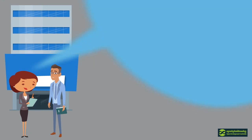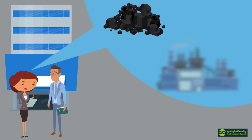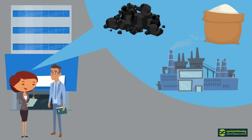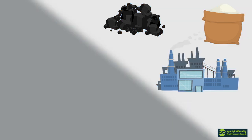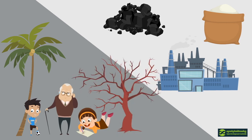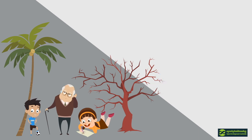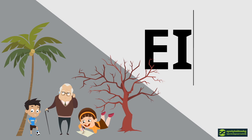Imagine a business wants to open a new coal mine, build a new factory, or exploit land for agriculture. These kinds of projects can have a huge impact on the environment and people living nearby. To predict the impact of such projects and to limit their consequences, a sub-decree on Environment Impact Assessment process requires a company or a public project manager in Cambodia to conduct an EIA.